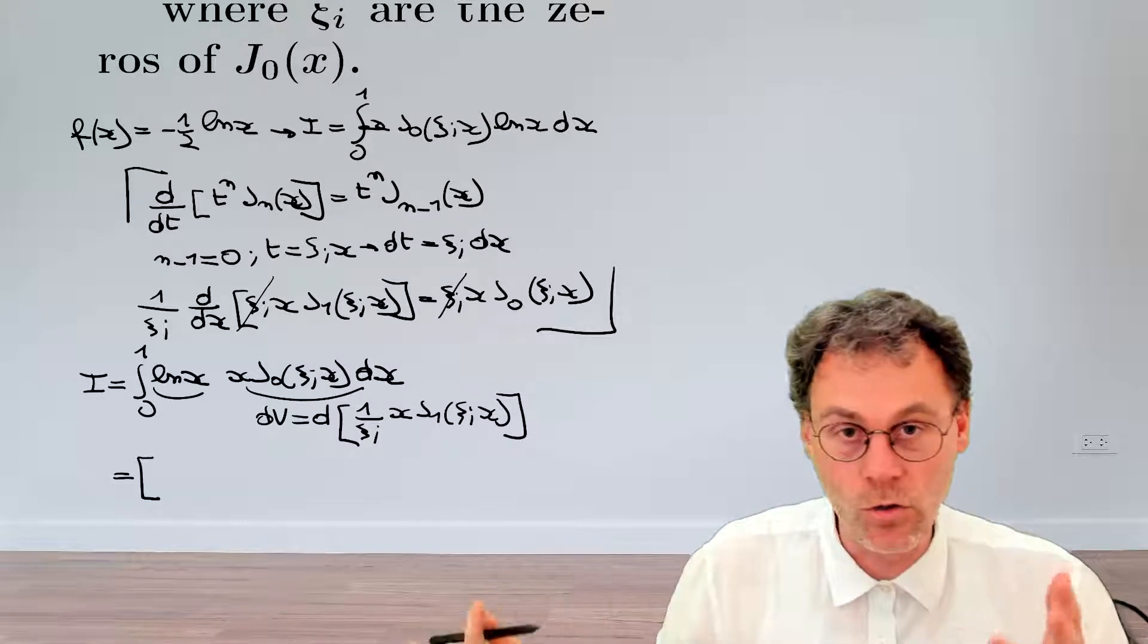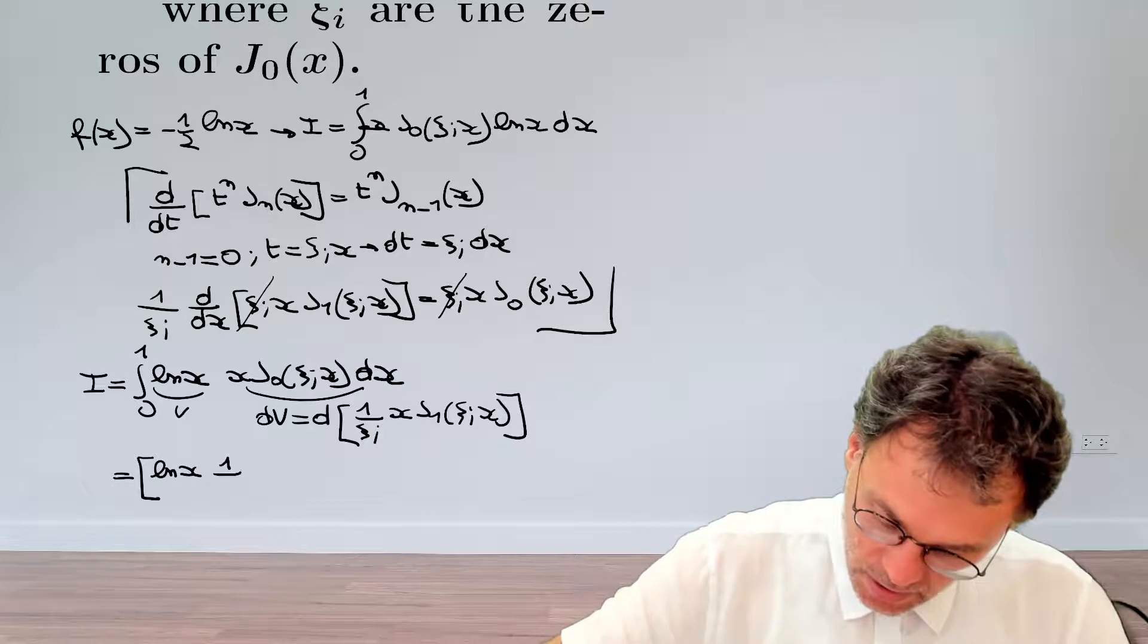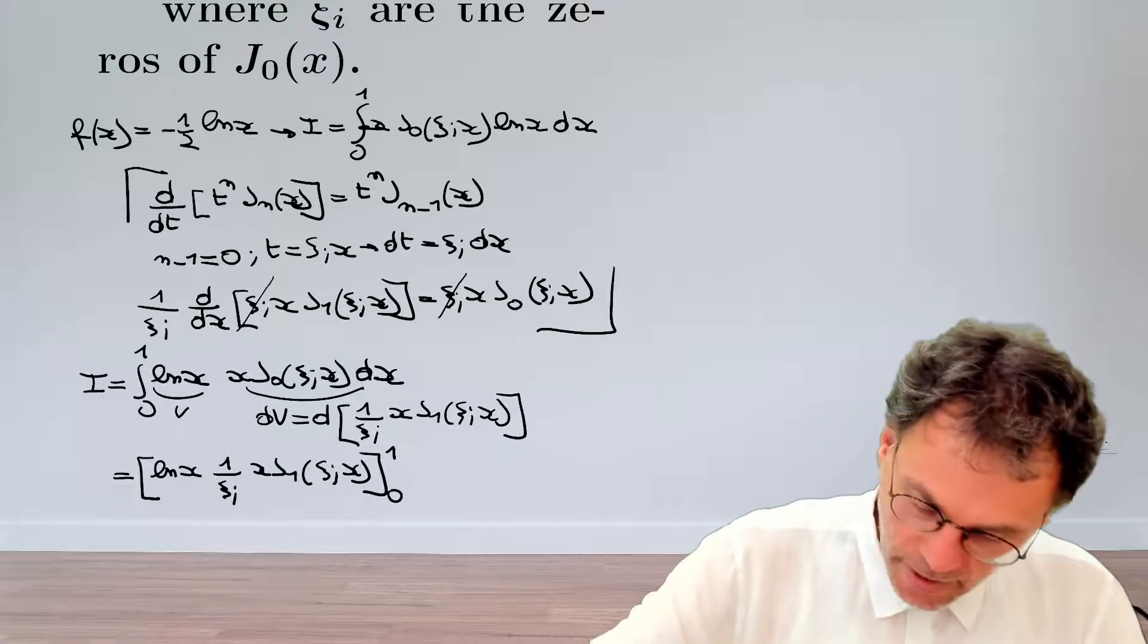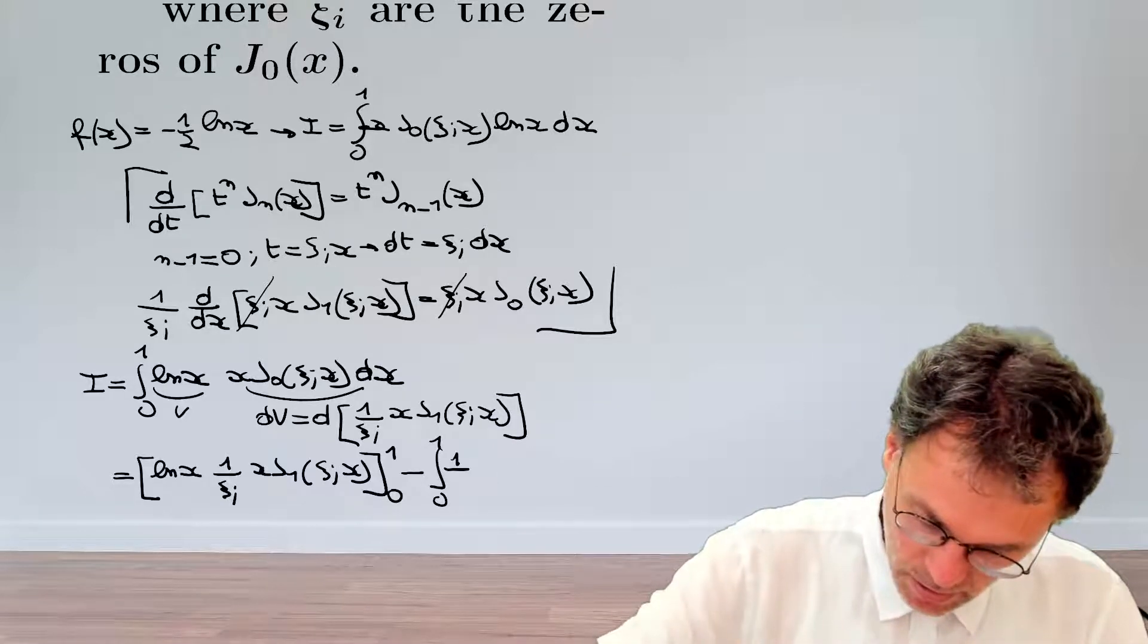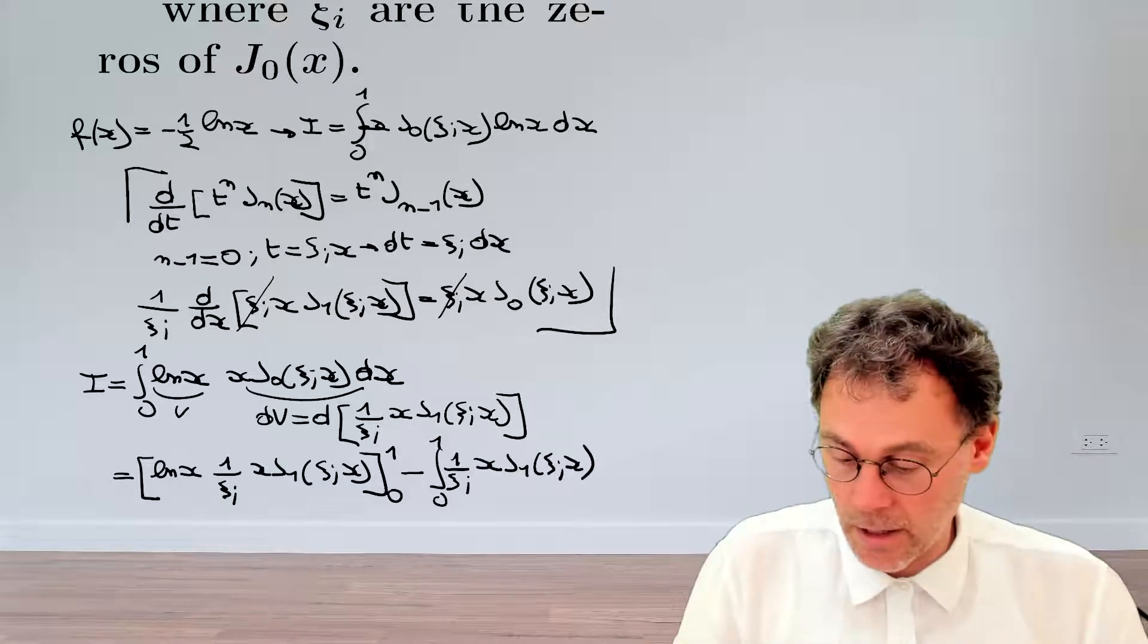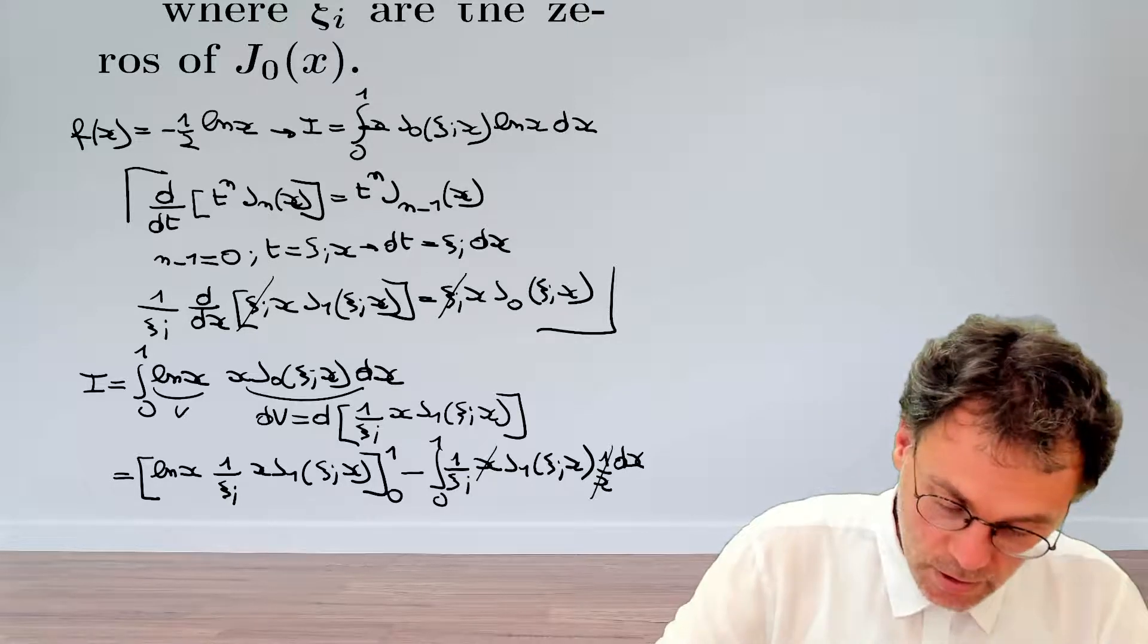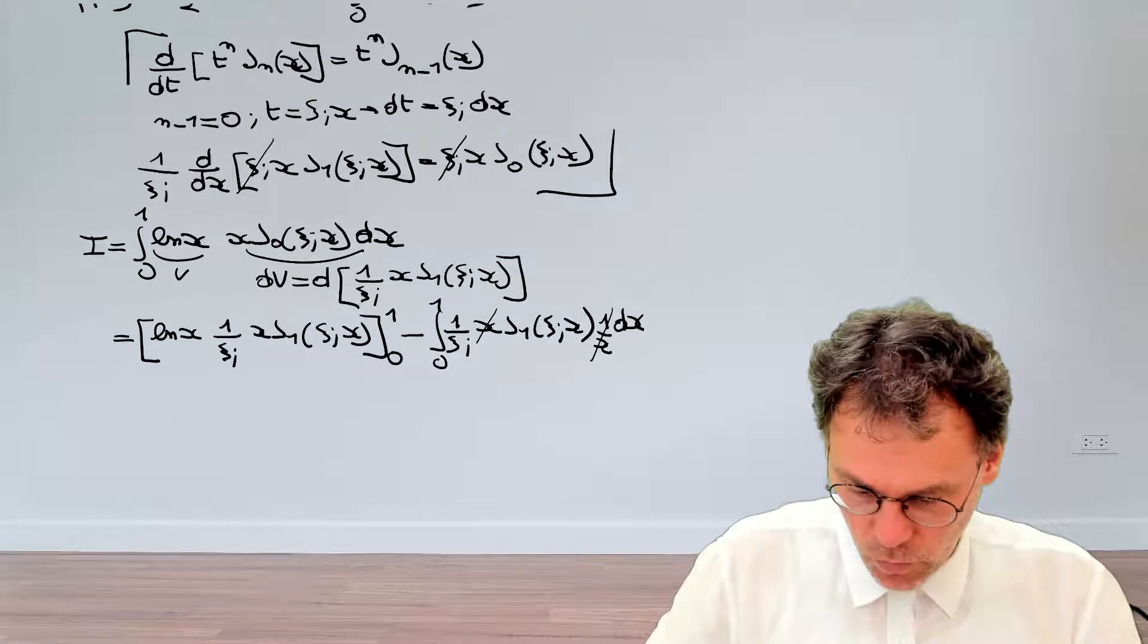So u is the logarithm of x. v is 1 over xi i x j1 xi i of x. And then our du, so the derivative of the logarithm, that becomes 1 over x. And that's good news, because that means we've gotten rid of our scary logarithm. And we can also divide by x here in both factors. So that seems like progress. Let's work this out a little bit more.